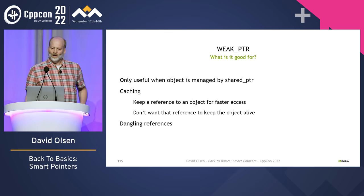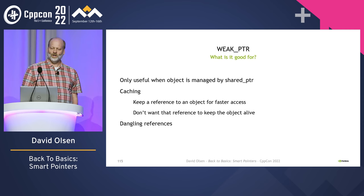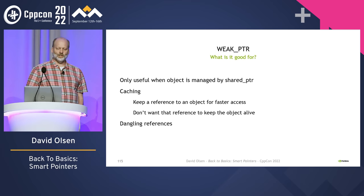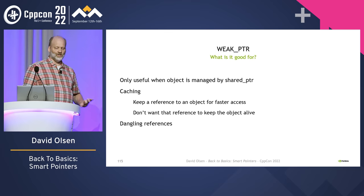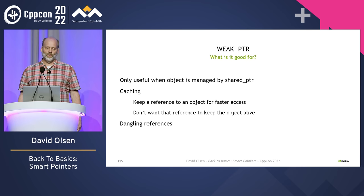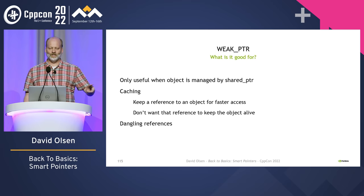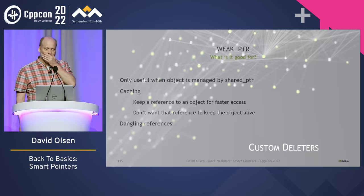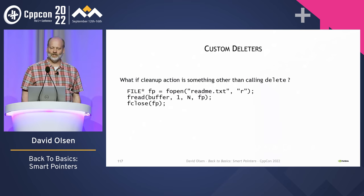When might you want to use weak_ptrs? Because weak_ptrs can only be created from shared_ptrs, they are only useful when ownership is managed by shared_ptrs — if you're using unique_ptr or something else, weak_ptrs will do you no good. weak_ptrs are useful for caching — if you keep a weak_ptr in your cache, you can access the object quickly as long as it is still alive; if the object goes away, you can safely detect that and fall back to a slower path. weak_ptrs can also help with the dangling reference problem — if there is a chance that your non-owning reference might dangle, use a weak_ptr rather than a raw pointer so you can safely detect whether or not the object can be accessed.